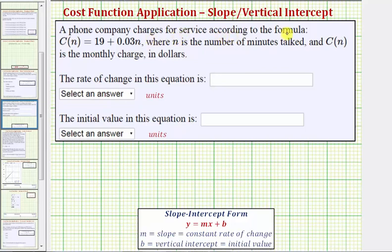A phone company charges for a service according to the formula C(N) equals 19 plus 0.03N, where N is the number of minutes talked and C(N) is the monthly charge in dollars. We're asked to determine the rate of change and the units, as well as the initial value and the units.